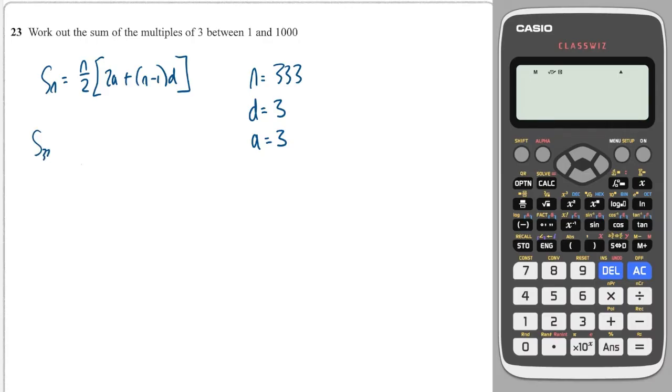So let's just substitute it into the formula. So the sum all the way up to the 333rd term is 333 over 2, times 2 times 3 is the first term, plus 333 minus 1 times 3 is the difference. So that just goes straight into your calculator. We start by doing 333 over 2, open brackets, 2 times 3, plus,